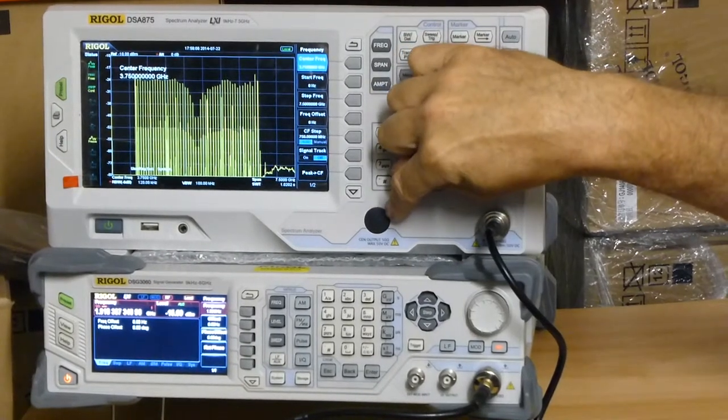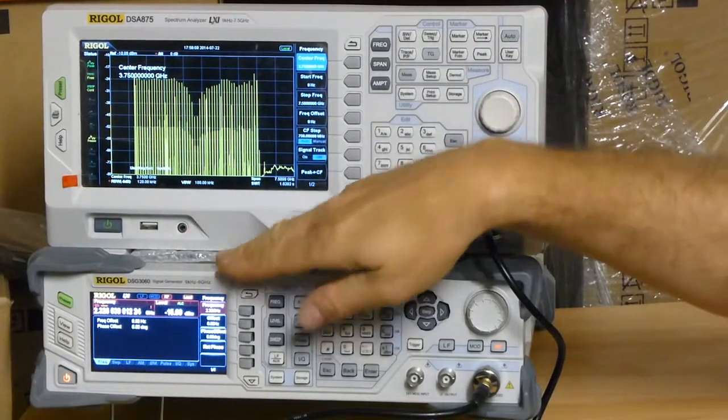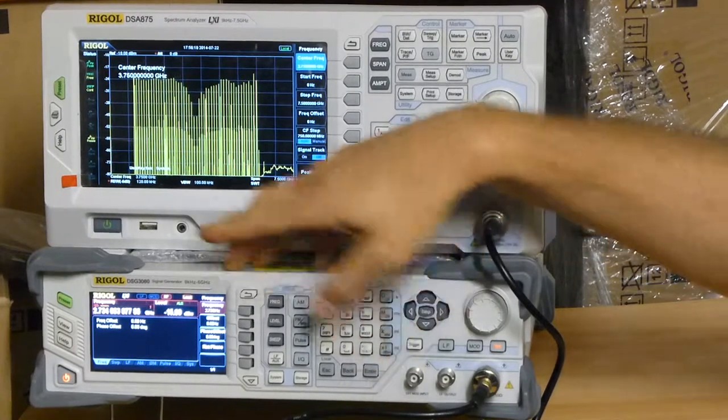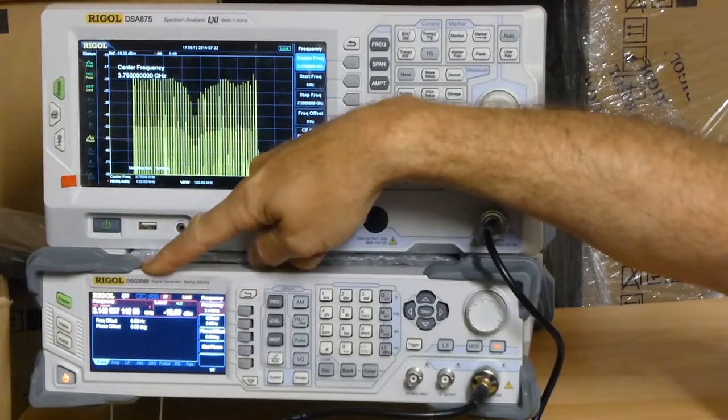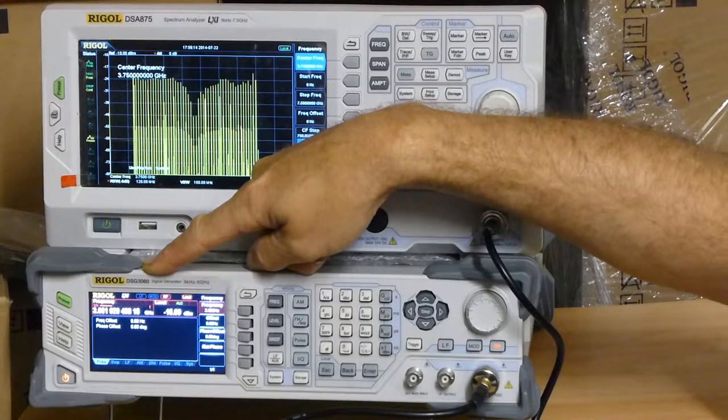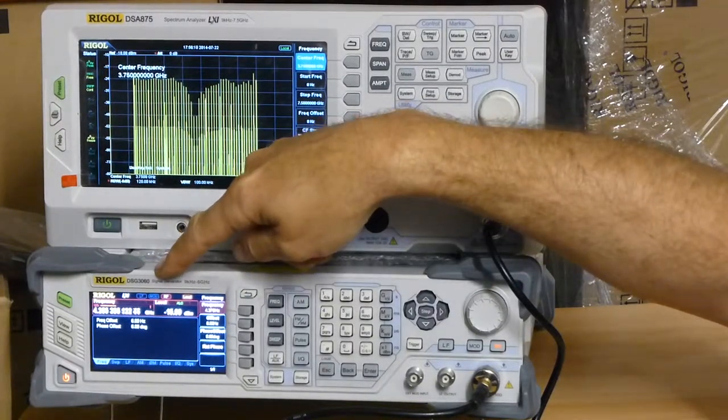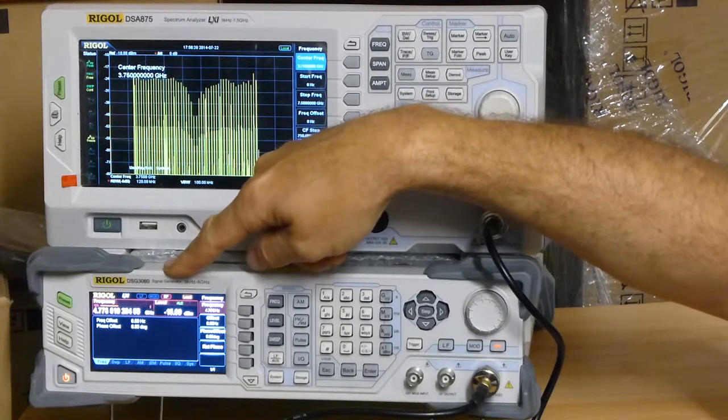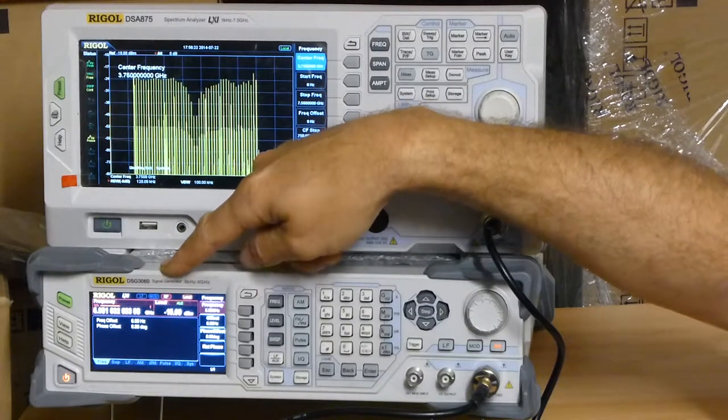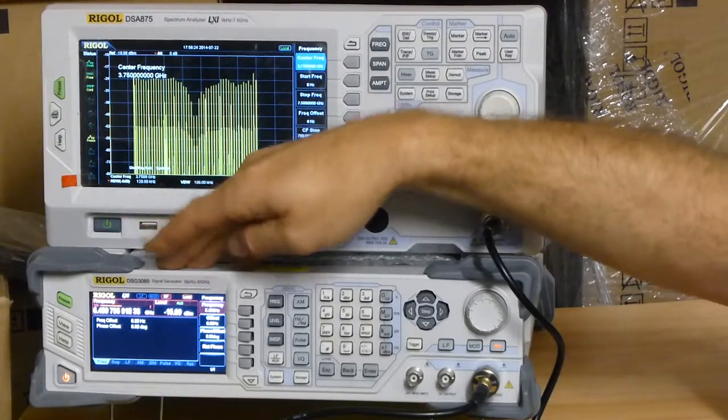This one is without a tracking generator. So down here to act as a generator, I'm using the new Regal DSG3000 series. This is a DSG3060, 6GHz signal source, RF signal source that will do IQ modulation up to 200MHz bandwidth, very powerful instrument.